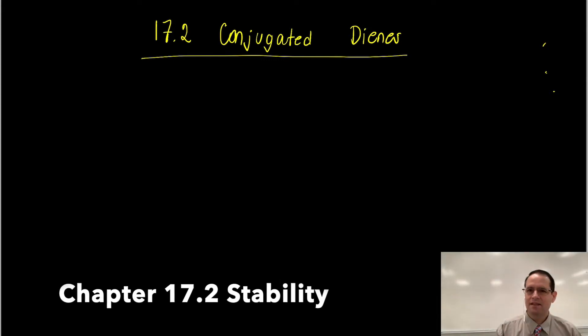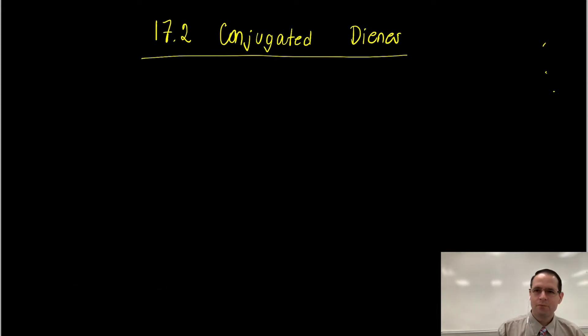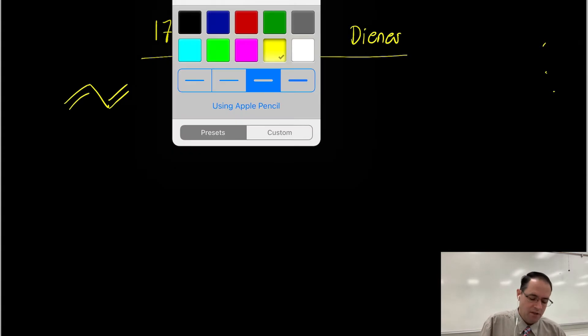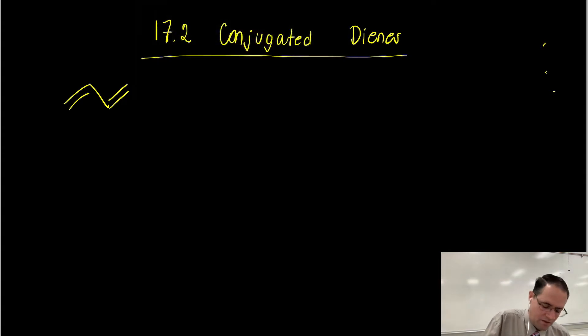Welcome back. We're doing section 17.2 in Clines here. We want to talk about conjugated dienes. Now, conjugated dienes, as you recall, are composed of two alkenes that are adjacent to one another. And let me discuss how these might be synthesized.